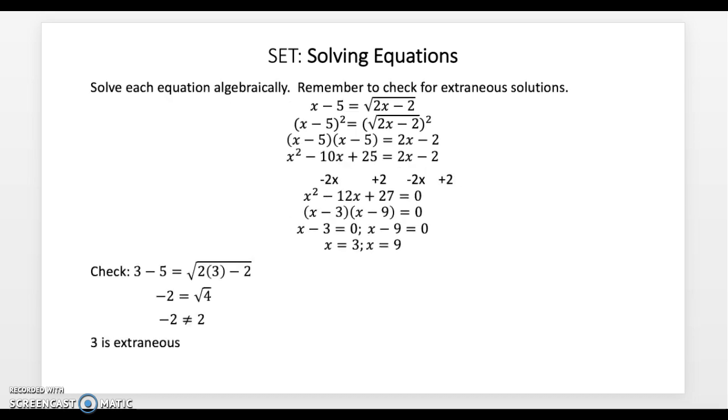Now we have to check for extraneous solutions as the instructions told us. So we're going to plug in this x into the original equation: x minus 5 equals the square root of 2x minus 2. Plug in that 3 and get negative 2 is not equal to 2, so it turns out 3 is extraneous. Let's take a look at 9. 9 gives us 4 equal to 4, so 9 is a solution.